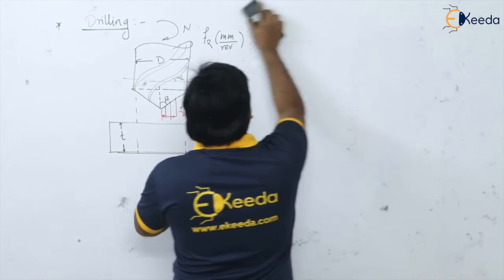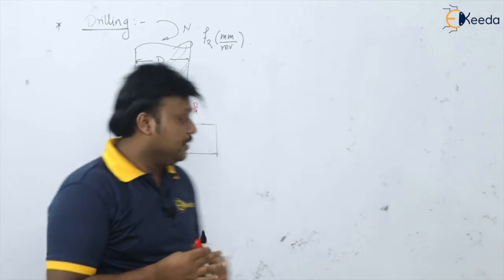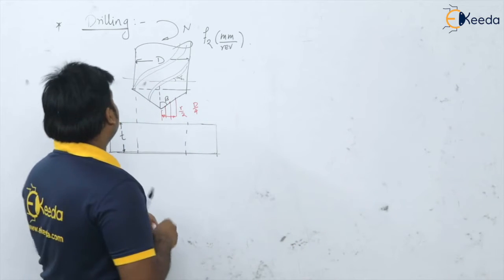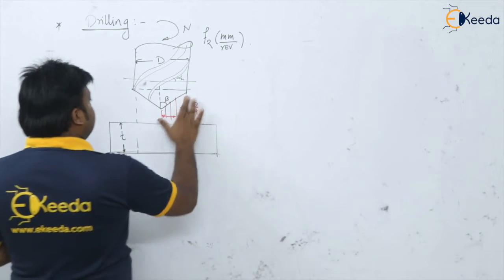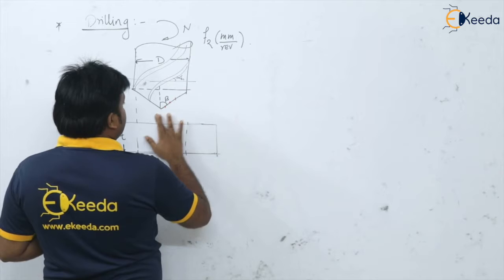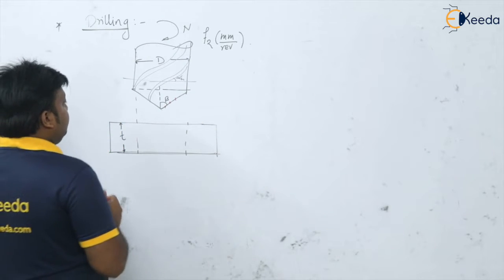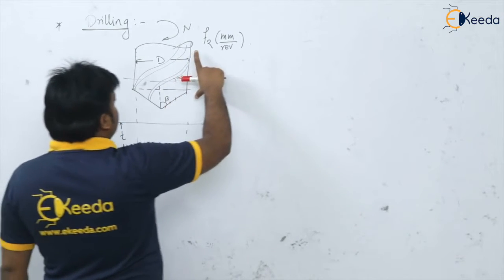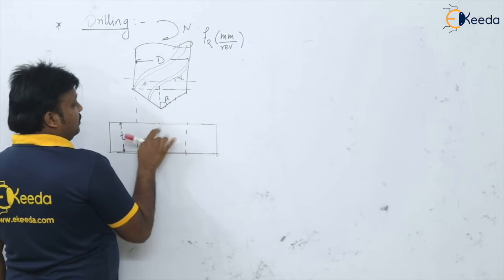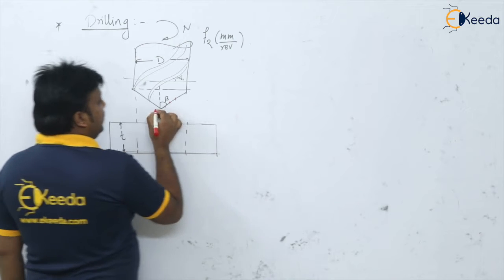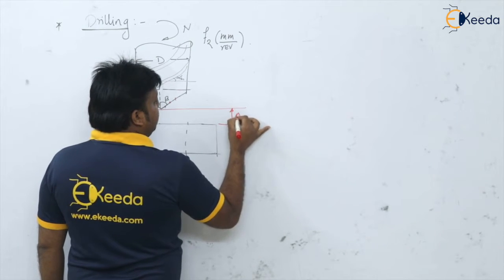Now we are interested in calculating the machining time for the drilling operation. We need to consider the basic lengths. If the tip of the drill is present on the workpiece surface, there is no approach. But here I am showing the approach — 'ap' is the approach.